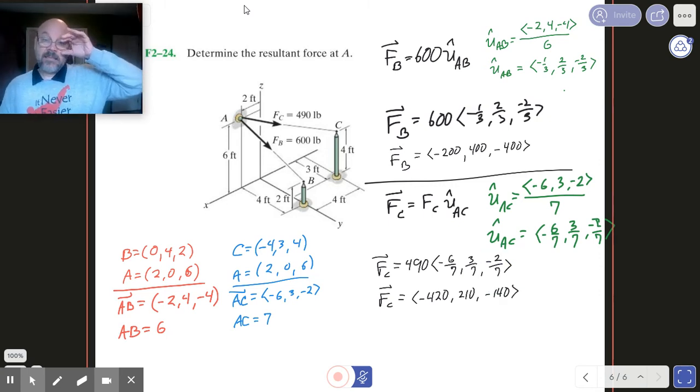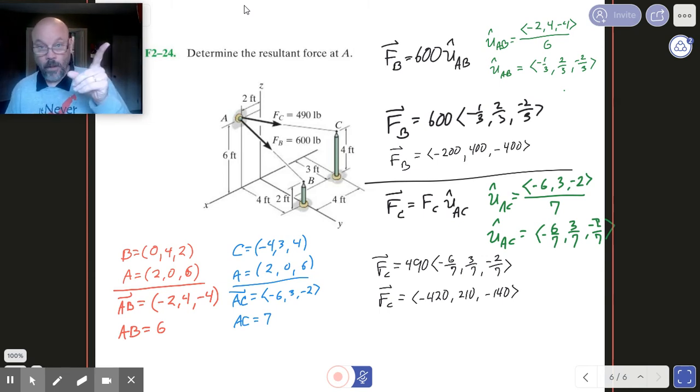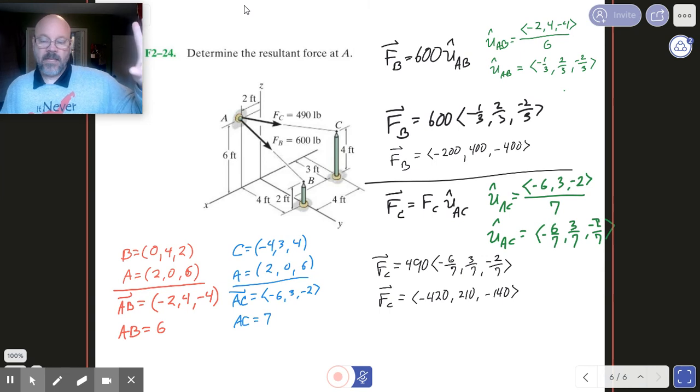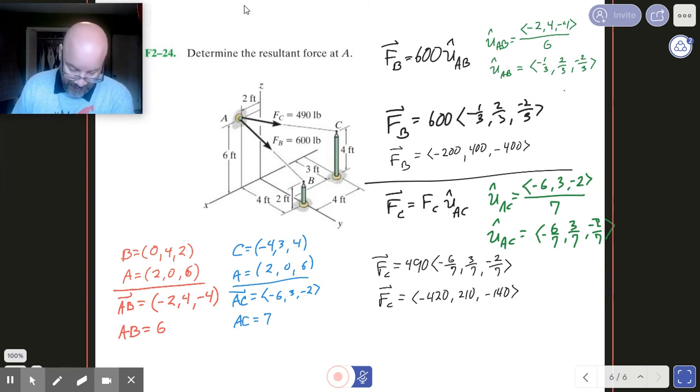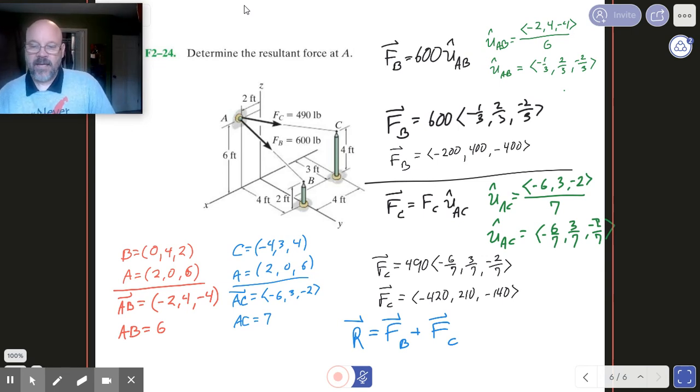Now that's not the end. That was step one. So step two is super simple. And step two, we're just going to add these things up. So the resultant is just going to be FB plus FC. That's all there is to that right there. So that's really trivial once you get your force vectors defined. And I'll let you handle that one.